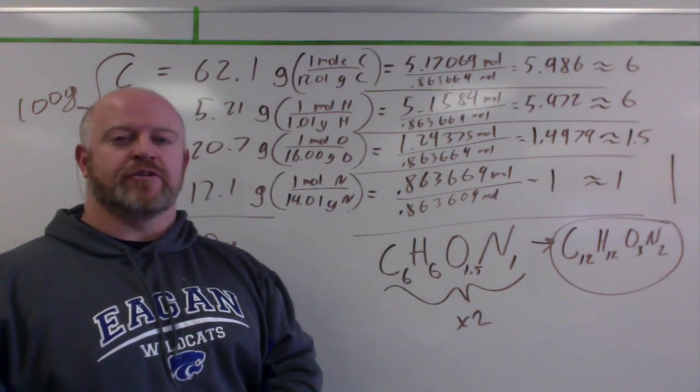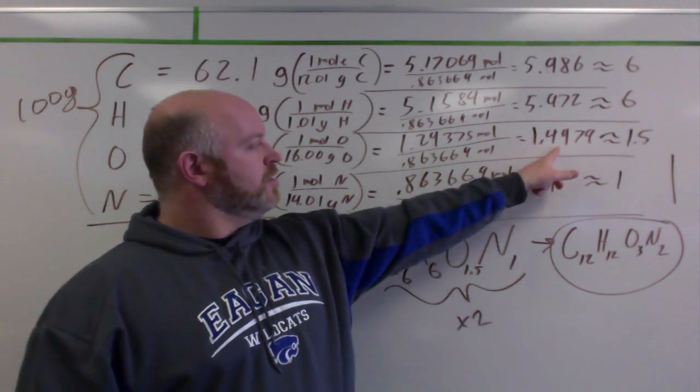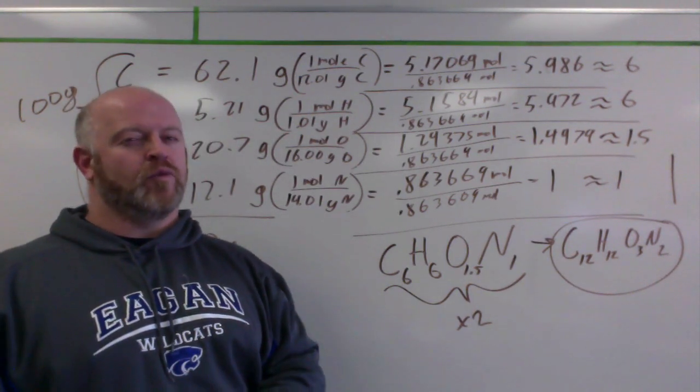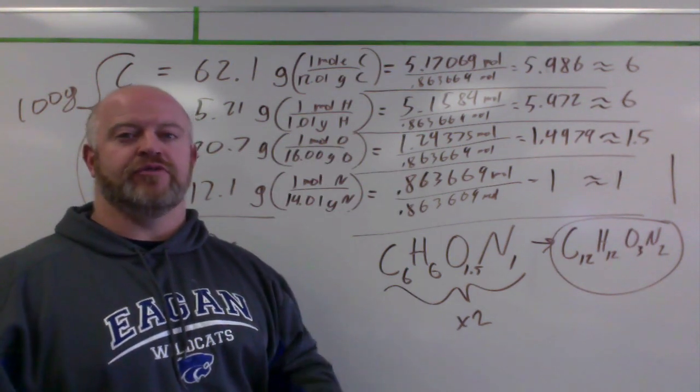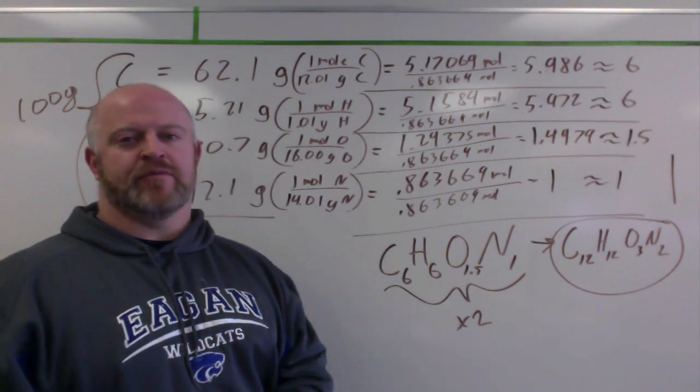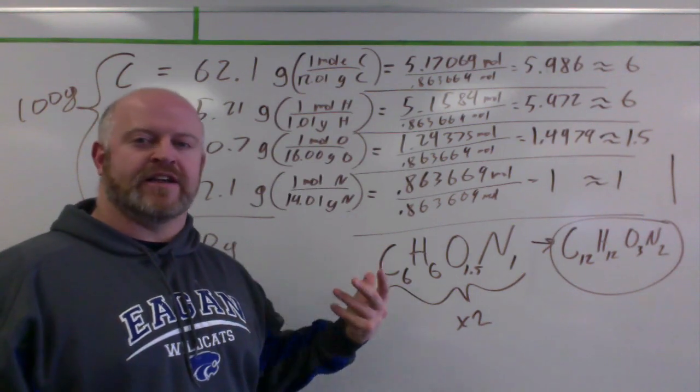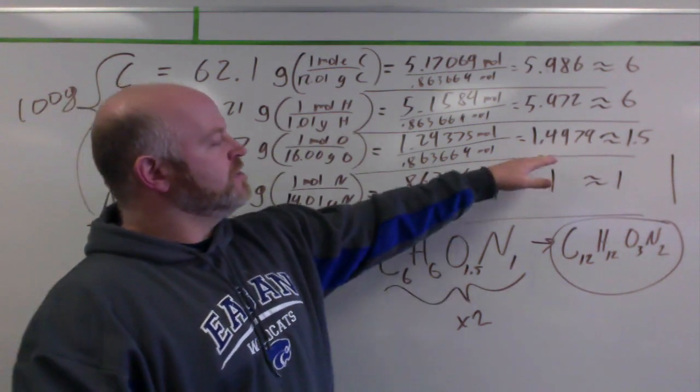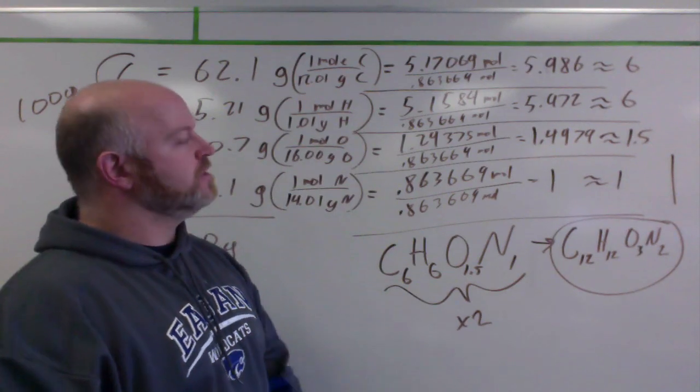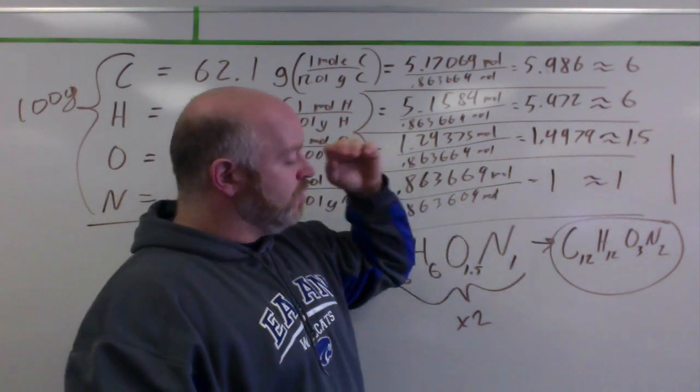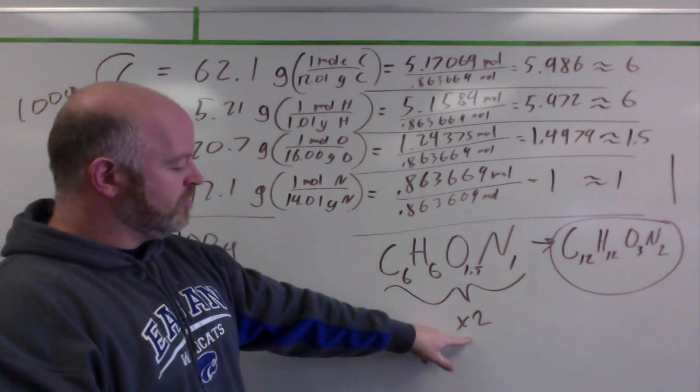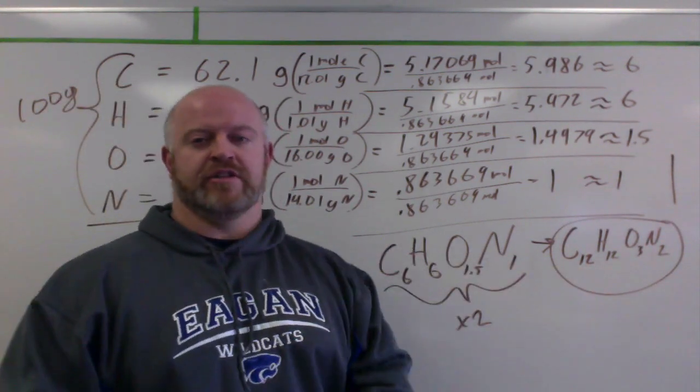Now, what you're going to get is either numbers close to a whole number, close to a 0.5, possibly close to a 0.33, or a third. And at worst case scenario, something that's very close to a 0.25, or a fourth. So, typically, your ratios are going to be somewhere in there. Anything more complex than that, and you really couldn't do it this way, you'd have to have a different method. So, we're looking for something that's close to a half, a third, a fourth, or a whole number. Anything above that, and we won't worry about it, especially for the scope of our class. So, we're about 1.5, which gives us this ratio. However, we can't have a decimal in our empirical formulas, so we multiply them all times 2 to get the empirical formula, as you see there.